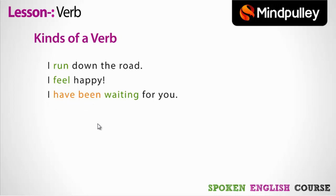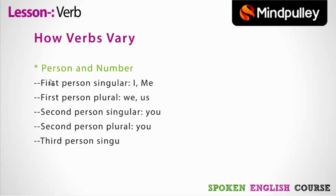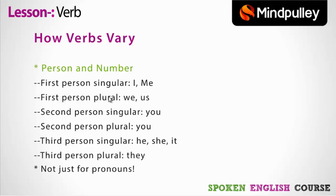Now we come to how verbs vary according to person and number of person. First person singular: I, me. First person plural: we, us. Second person singular: you. Second person plural: you. Third person singular: he, she, it. Third person plural: they. Depending on whether it is first person, second person, or third person, the forms of the verb change.